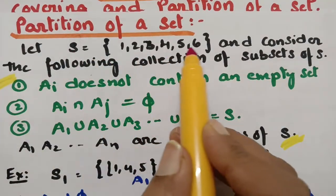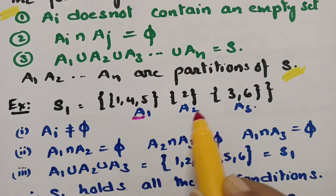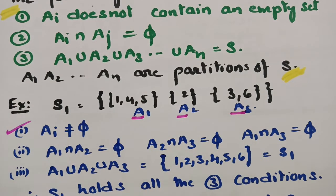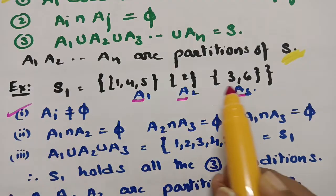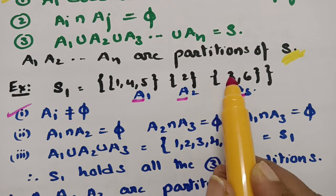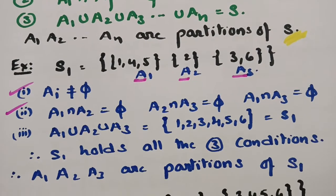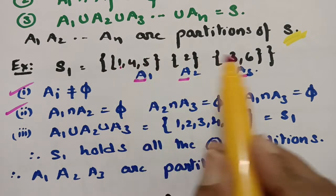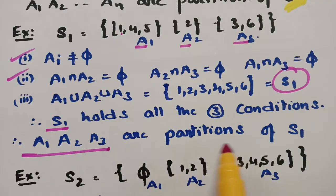For collection S1, the subsets are A1 = {1, 4}, A2 = {5, 2, 3}, and A3 = {6}. First condition: no subset is empty — satisfied. Second condition: A1 ∩ A2 = empty set, A2 ∩ A3 = empty set, A3 ∩ A1 = empty set — all disjoint, satisfied. Third condition: A1 ∪ A2 ∪ A3 = {1, 2, 3, 4, 5, 6} = S — satisfied. Therefore S1 holds all three conditions, and A1, A2, A3 are the partitions of S1.